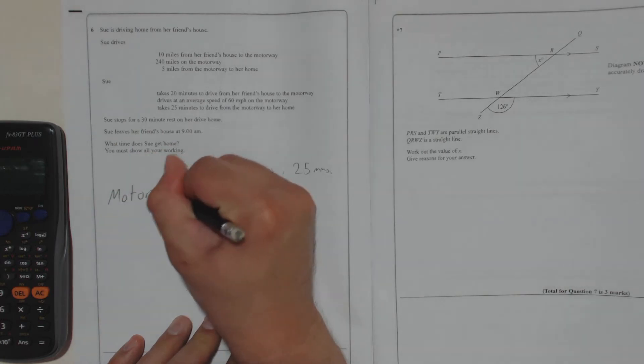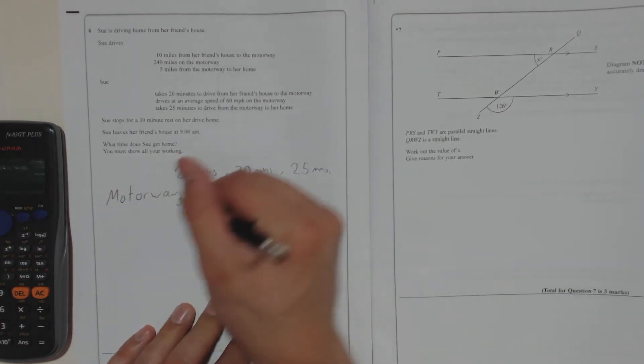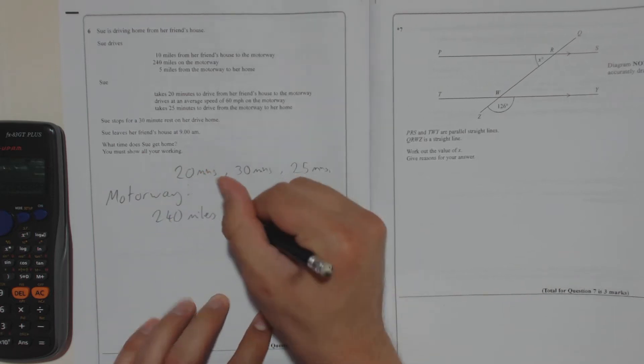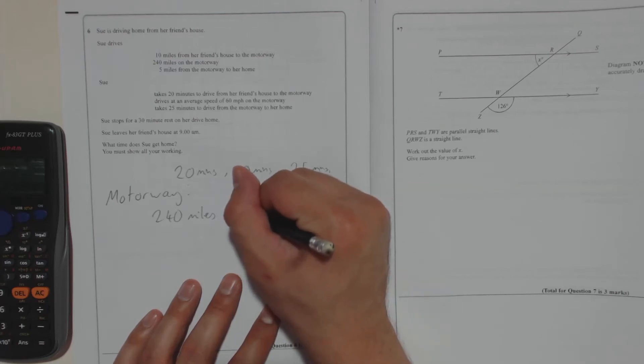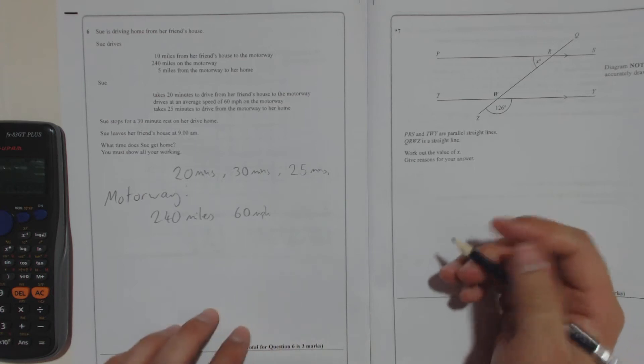So motorway. It's 240 miles, and she drove at 60 miles per hour average speed. So remember, speed equals distance over time.